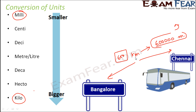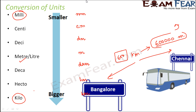The important concept is how we convert from one unit to another. The units are: milli, centi, deci, meter (or litre), deca, hecto, kilo. When measuring length, the base unit is metre, giving us millimetre, centimetre, decimetre, metre, decametre, hectometre, and kilometre. When measuring volume, the base unit is litre, giving us millilitre, centilitre, decilitre, litre, decalitre, hectolitre, and kilolitre.